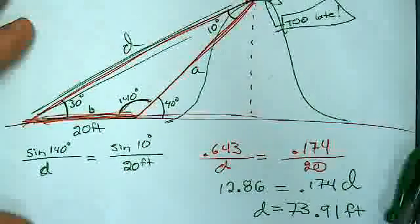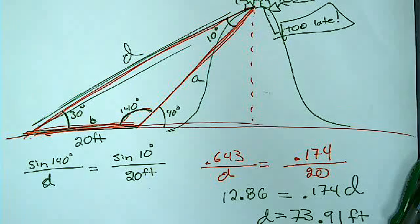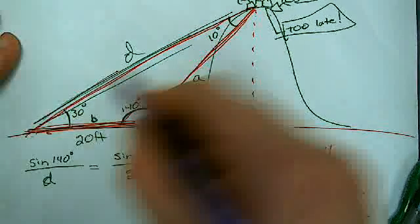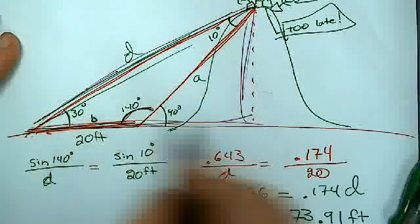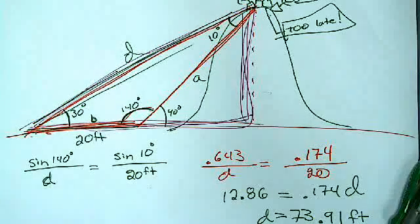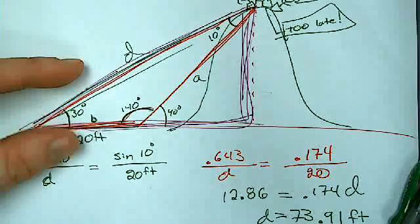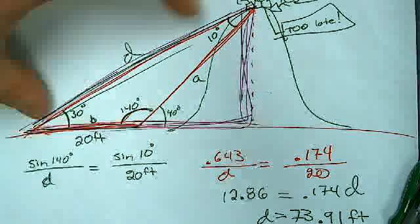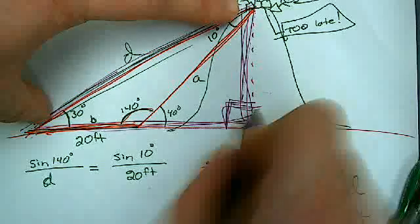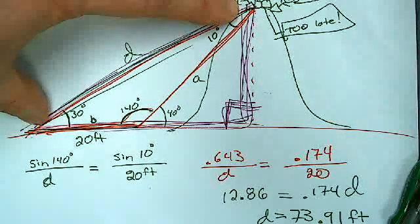Now I still actually haven't found how tall a roller coaster is yet, but now I've got a right triangle that I could. I've got this right triangle right here that I can use. I've got 30 degrees. I've got the hypotenuse. I can find this over here using sine again, right?